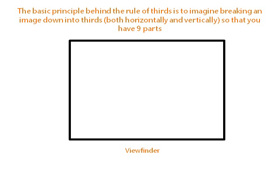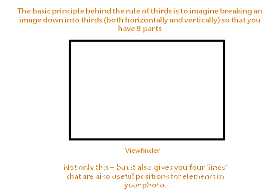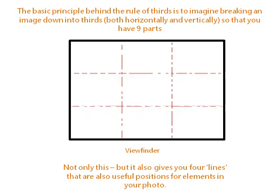The basic principle behind the rule of thirds is to imagine breaking images down into thirds, both horizontally and vertically, so that you have nine parts. This also gives you four lines that are useful for positioning elements in your photo.